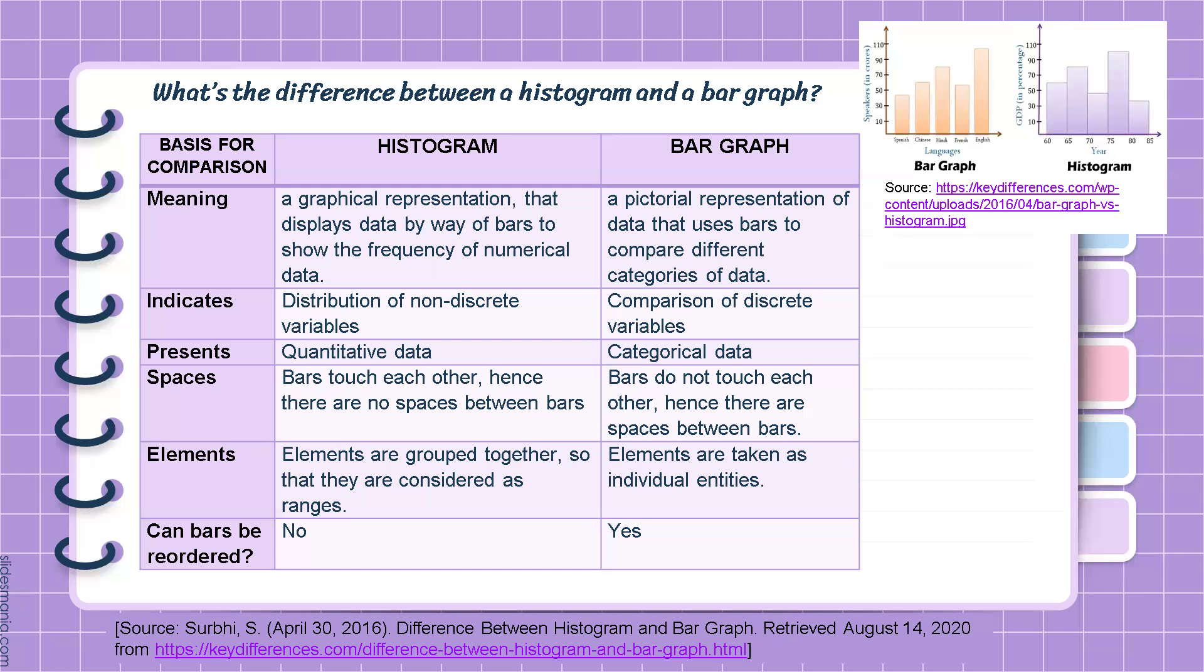Histogram presents quantitative data, while bar graph presents categorical data. The bars in histogram touch each other, hence there are no spaces between bars. The elements in histogram are grouped together so that they are considered as ranges, while elements in bar graph are taken as individual entities.